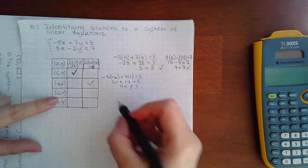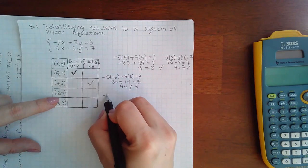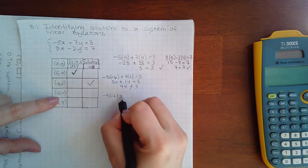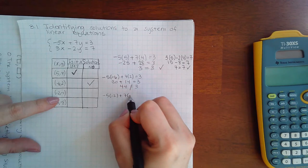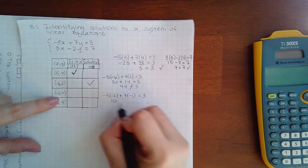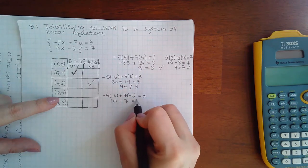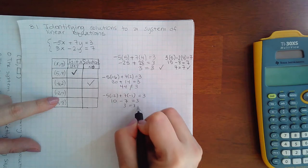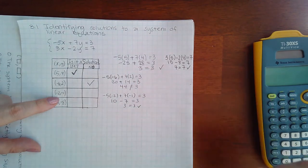Now if I try the next point, negative 5 times negative 2 plus 7 times the y value negative 1, we get 10 negative 7, and I do get 3 equal to 3. So I do have to check the other equation.